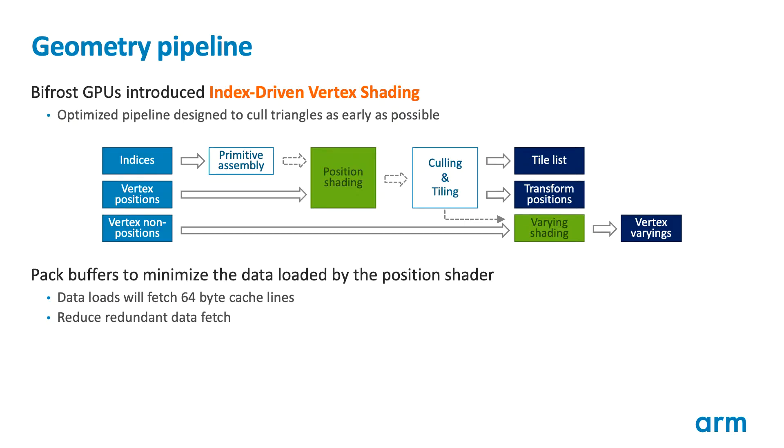In the first module of this series, we introduced the concept of geometry processing pipelines that reorder the operations performed to minimize the amount of redundant processing. All Mali GPUs since the Bifrost architecture family implement an optimized index-driven vertex shading pipeline. This computes the position for each reference vertex, then runs the primitive assembly and culling stage, and finally runs the remainder of the vertex shader to compute the other non-positioned vertex shader outputs.